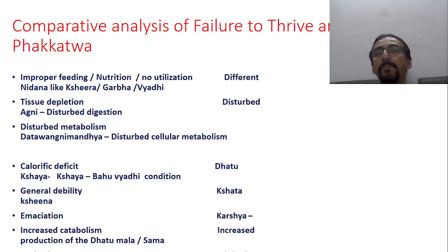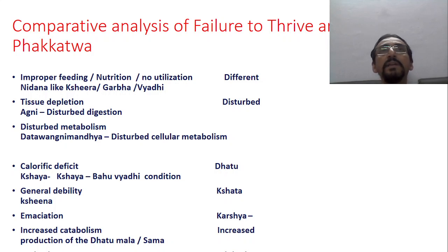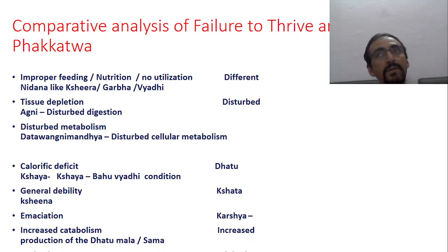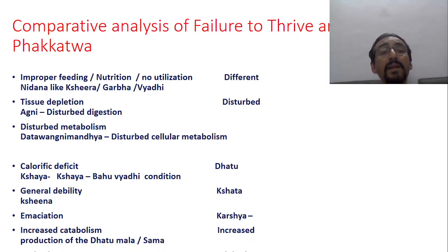Then comes agni — metabolic digestive power and metabolic activities — which is definitely disturbed in FTT. In Ayurveda, in fakka roga also, it is very clearly mentioned as pradushta agni kasha — disturbed metabolism. Dato agni mandya — disturbed cellular metabolism — has been explained.